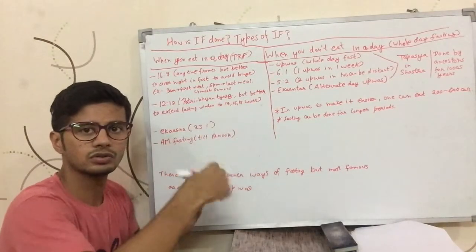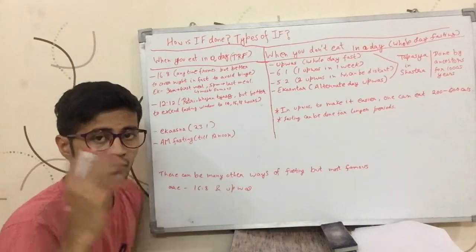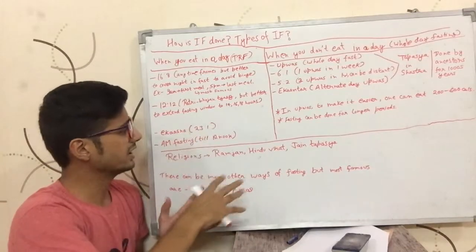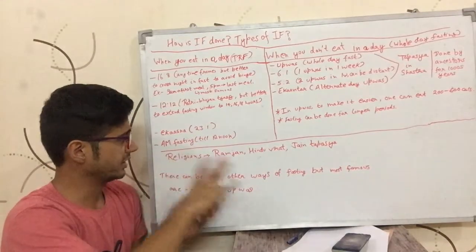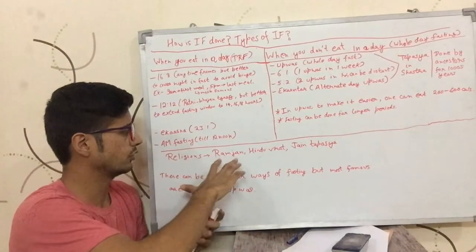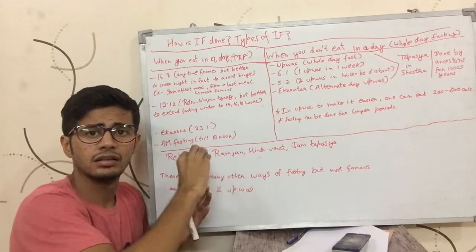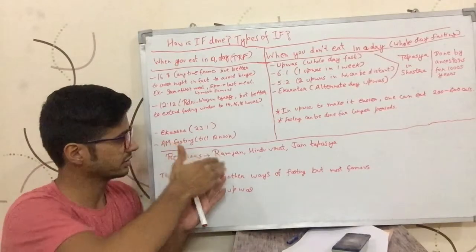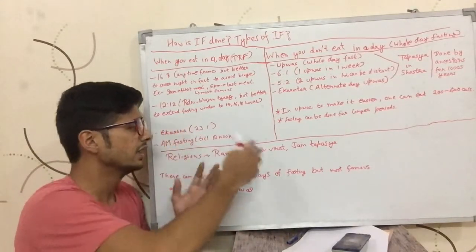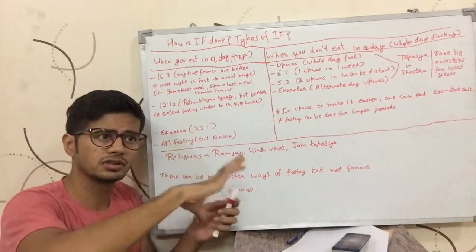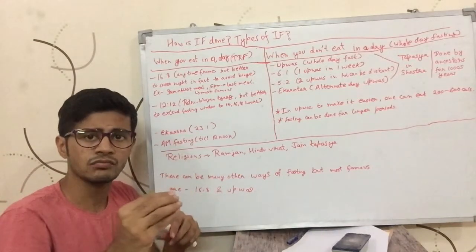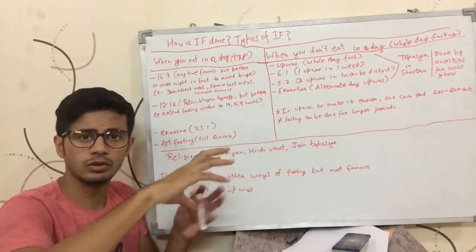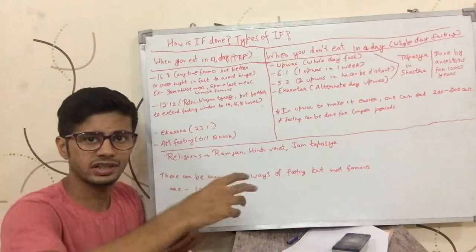When you do not eat anything, Upwas is the most famous method—where you're not eating for your day and you do that once, twice, or thrice a week, or maybe alternate day fasting. Intermittent fasting has been a part of many religions. For example, in Muslims during the month of Ramzan, they would not eat in the daytime and they eat in the nighttime—that's a variation of intermittent fasting. In Hindu religion and many other religions, they would not eat on some designated days.